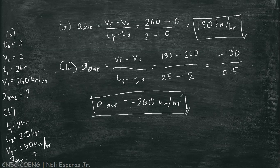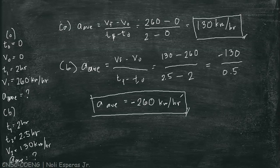So, what we can observe with this problem: the plane does not change direction, but we have a negative average acceleration. The first average acceleration of 130 km/h squared means starting from rest it accelerated to 260 km/h. But in letter B, starting from 260 km/h, it slowed down to 130 km/h. So, we have a negative acceleration or deceleration, equal to negative 260 kilometers per hour squared.